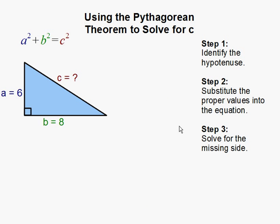Using the Pythagorean Theorem to solve for c. In this problem, we have a right triangle and we are to solve for the missing side. With a right triangle, you use the Pythagorean Theorem, a squared plus b squared equals c squared, to solve for a missing side.